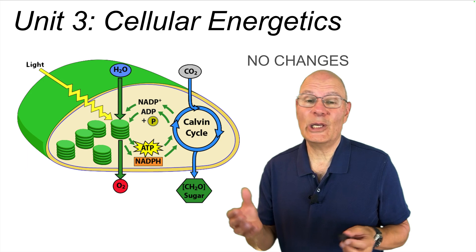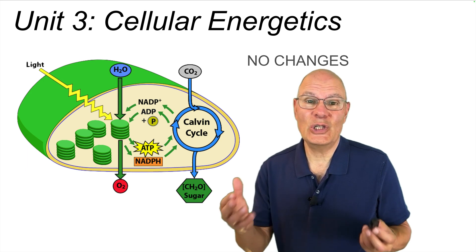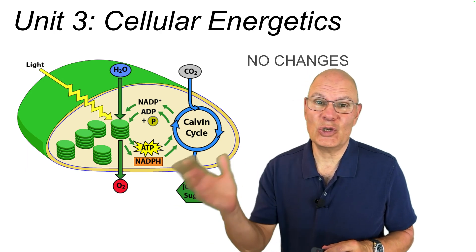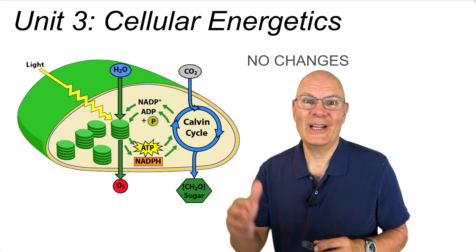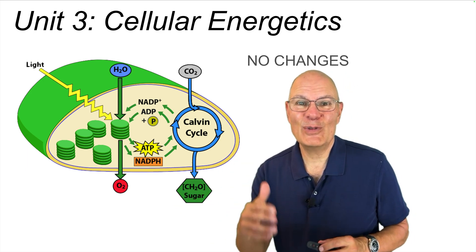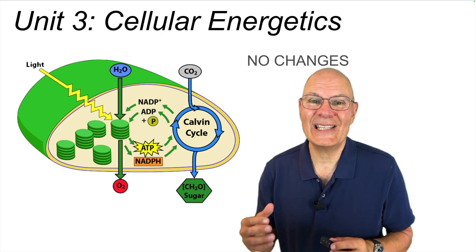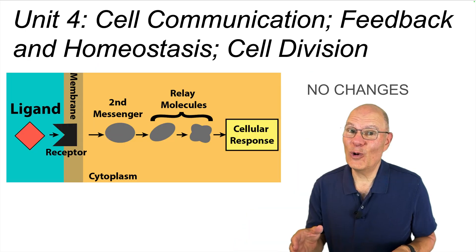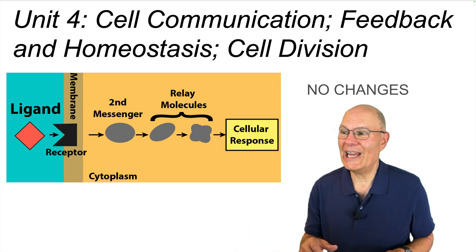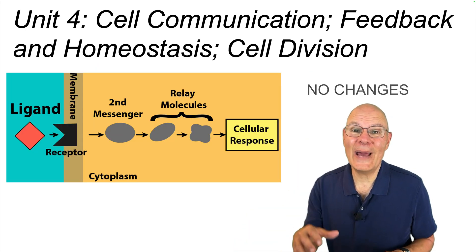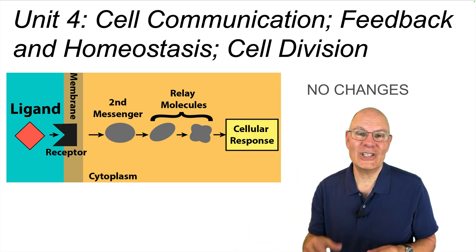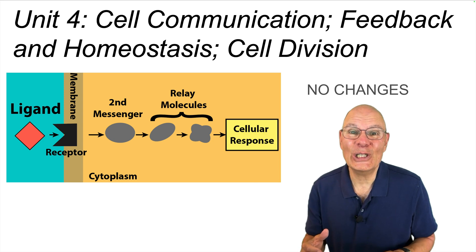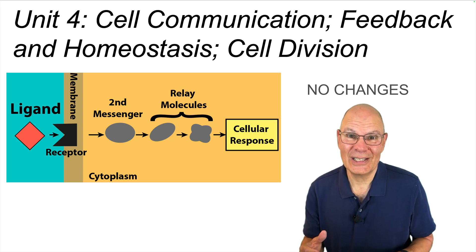Unit 3, cellular energetics — no changes. You'll still learn about enzymes, photosynthesis, and cellular respiration. Unit 4, cell communication, feedback and homeostasis, and cell division — essentially no changes.